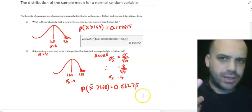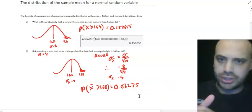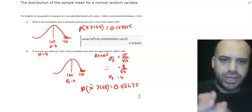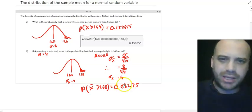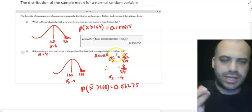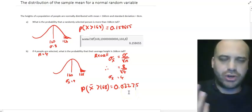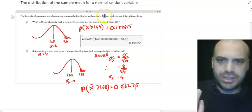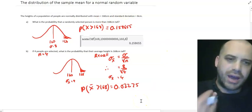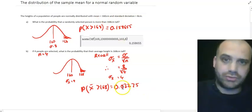So what does this mean? Okay. If you pull four people from this population and you average their heights, there is only about a 2% chance that their average of the heights will be 168 centimeters tall. That makes sense, right? Because the average height of these people is 160. So you would assume that the average height of a sample would be also 160.